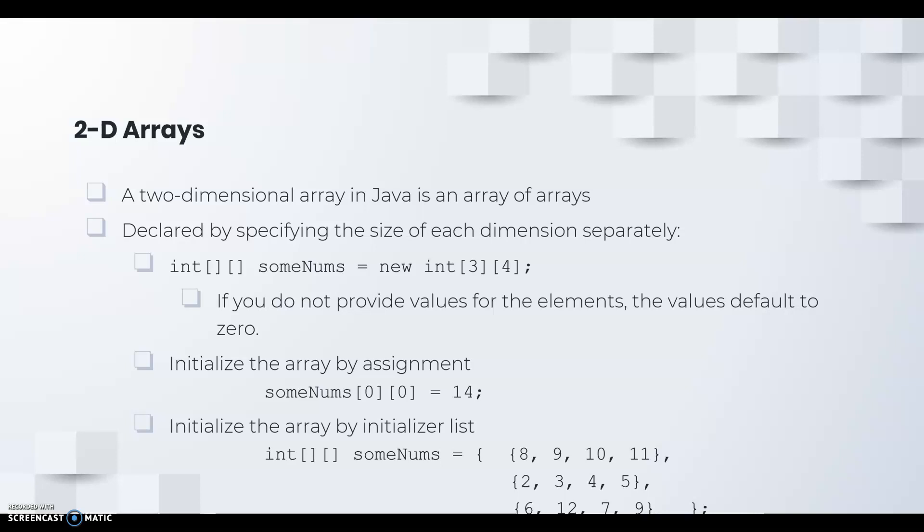A two-dimensional array can be declared by specifying the size of each dimension separately. For example, right here we're declaring an integer 2D array called sumnum. You'll notice we use two array operators in the declaration. We use the assignment operator followed by the new keyword and it is a new int 2D array that contains three rows, four columns.